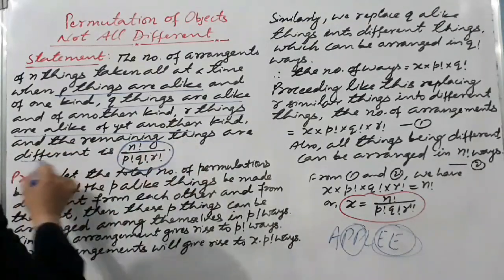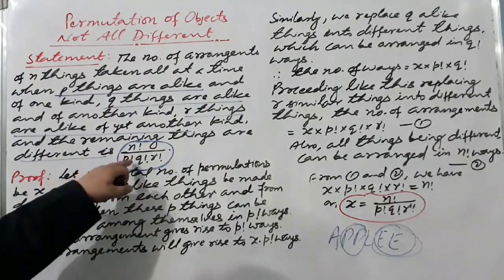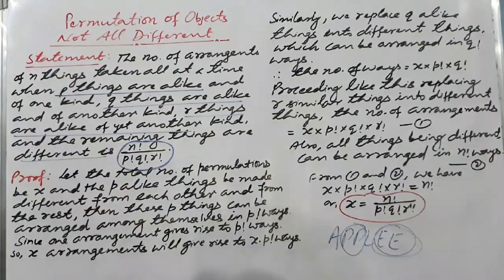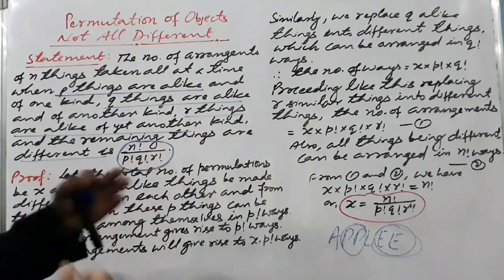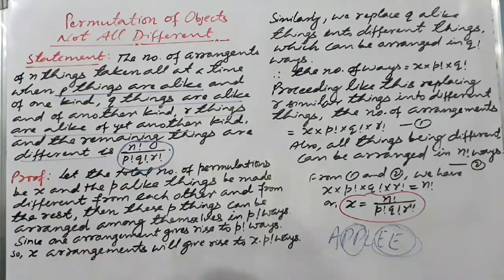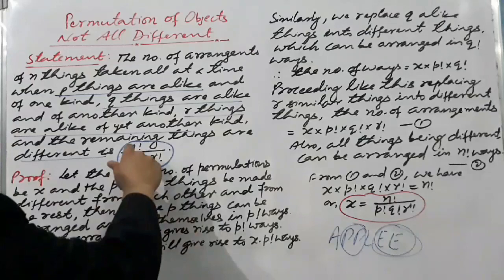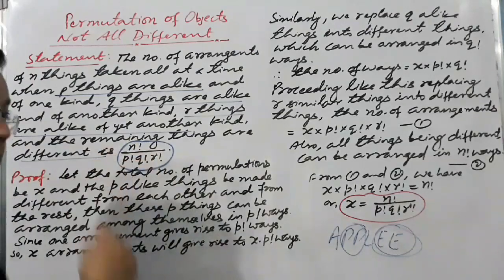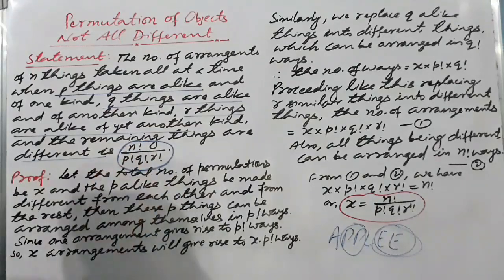And r things are alike of yet another kind, and the remaining things are different, is given by n factorial upon p factorial times q factorial times r factorial. If we have only two groups of like objects, we write n factorial upon p factorial times q factorial. If only one group, n factorial upon p factorial.